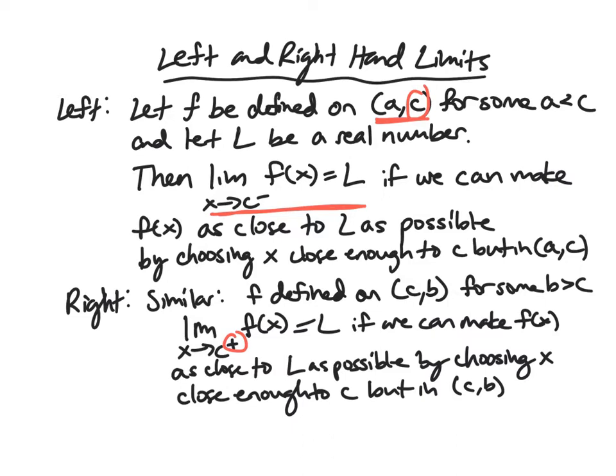a good way to remember the notation. We read this as the limit as x approaches C from the right of f(x) equals L. Again, if we can make f as close to L as possible by choosing x close enough to C but to the right of C, or in this interval from C to B.